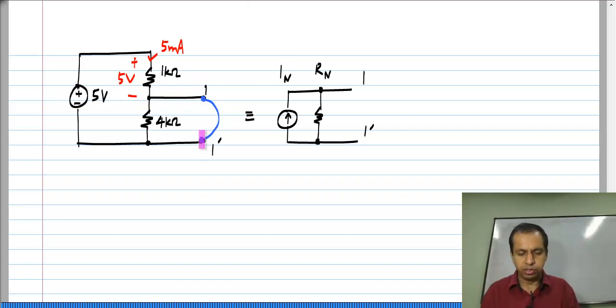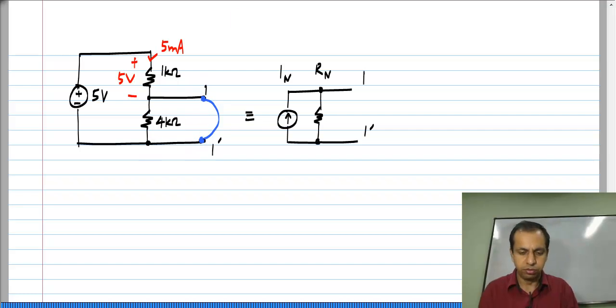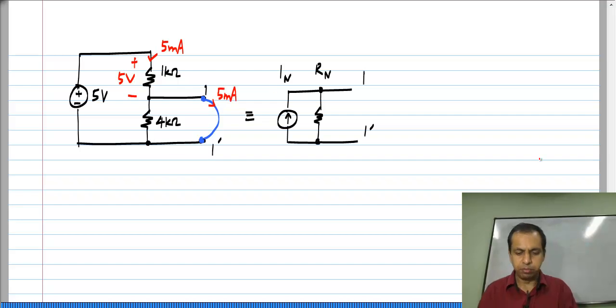Remember, this 4 kilo ohm is across the short circuit. So, all of the current will go into the short circuit, not the 4 kilo ohm resistor. So, it will be 5 milliamps in that direction.